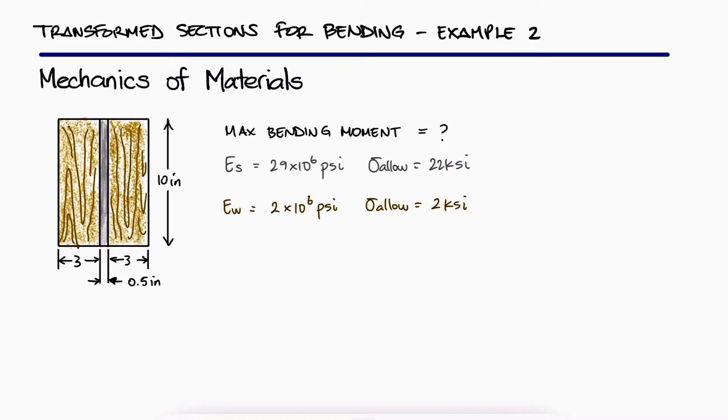This is the second example for the transformed sections and composite materials in bending main video. The links to the other examples and that main video are in the description below.